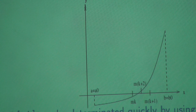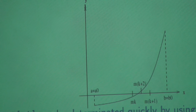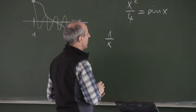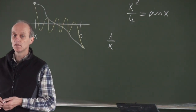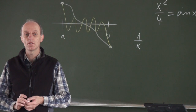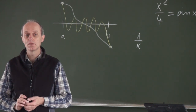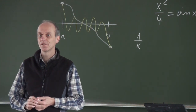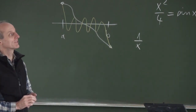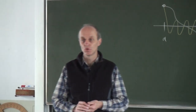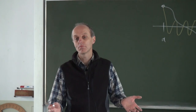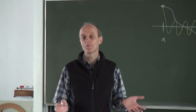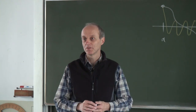One divided by x. One over x. So what is your counter example? We don't have an intersection with the x-axis. So there is a function which has no root. I would say it's not surprising that if we have a function with no root, we don't find a root.